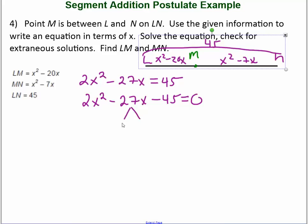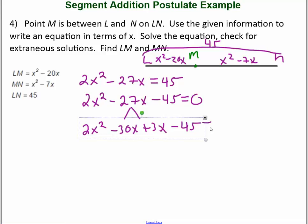So it doesn't matter whether you put the 30x or the 3x here. It does not matter. Let's go ahead and do this. I'm going to make this negative 30x. That means this has to be a positive 3x. Minus 45 is equal to 0.